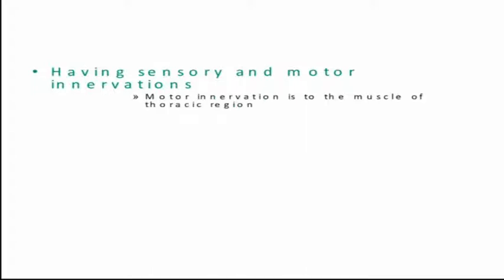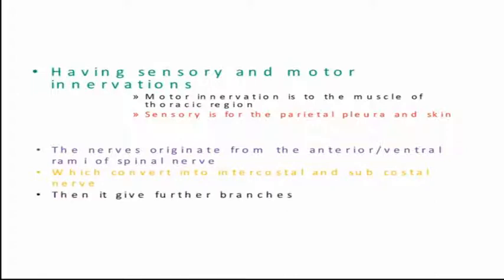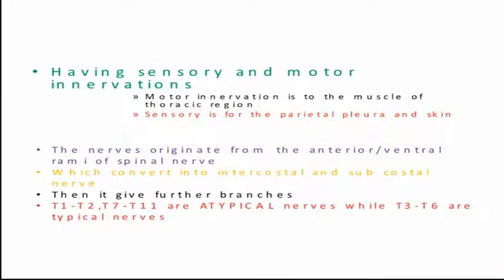The thoracic supply has both sensory and motor innervation. The motor innervation goes to the muscles of the thoracic region, and the sensory innervation is for the parietal pleura and the skin. The nerves originate from the anterior or ventral rami of the spinal nerves, which convert into the intercostal and subcostal nerves. Further branches include T1, T2, T7, and T11, which are the atypical nerves, while T3 to T6 are the typical nerves.